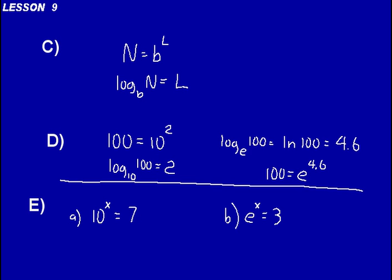Let's go ahead and do some practice problems. Let's apply what we've learned about logarithms and these two formulas. Look at practice problem A: we have a base of 10 raised to x equals 7. We can rewrite that in logarithmic form as log base 10 of 7 equals x. You can do that on your calculator — just hit the log button, type in 7, hit enter. To three decimal places, x equals 0.845.